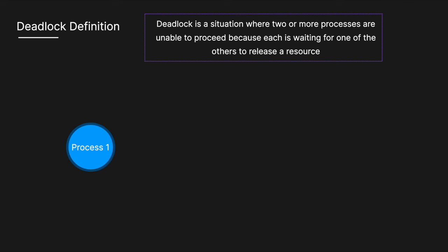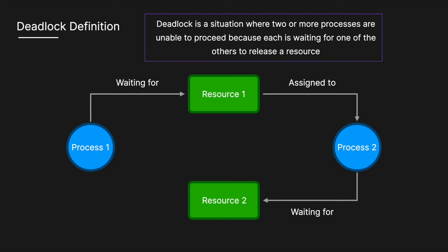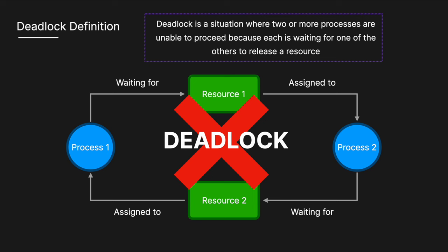Let's say we have process one and it is waiting to get access to resource one. However, resource one has already been assigned to process two, and process two is waiting to get access to resource two, which has already been assigned to process one. Here we have a circular chain — process one will never access resource one, and process two will never access resource two, and therefore we have deadlock.